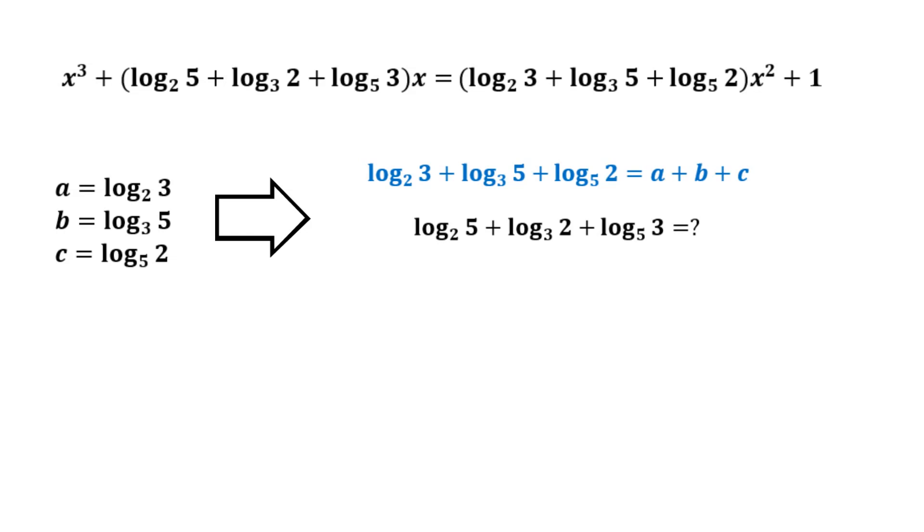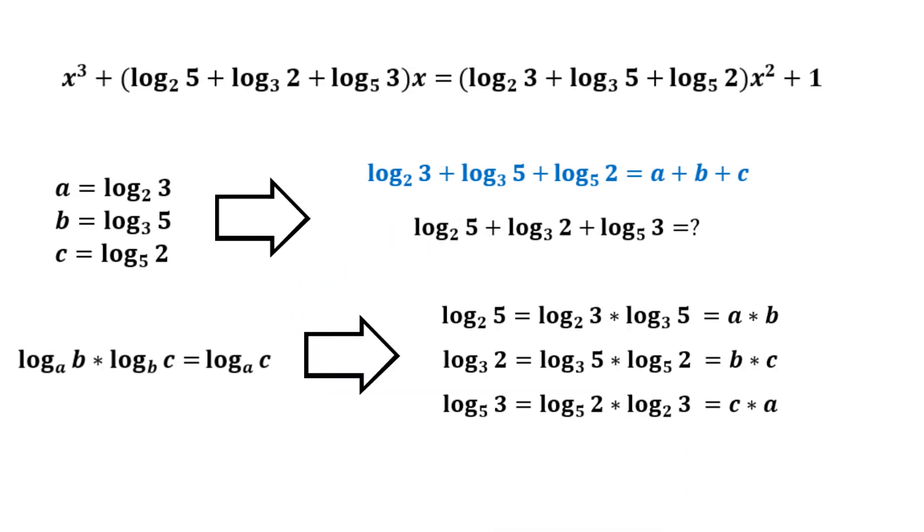Even though logarithms at these expressions are different, they have similar structures so to say. Meaning that the values under the logarithms and the bases are constructed from the same three numbers 2, 3, and 5. Therefore, we can use the base rule for logarithms to write these expressions in terms of a, b, and c.